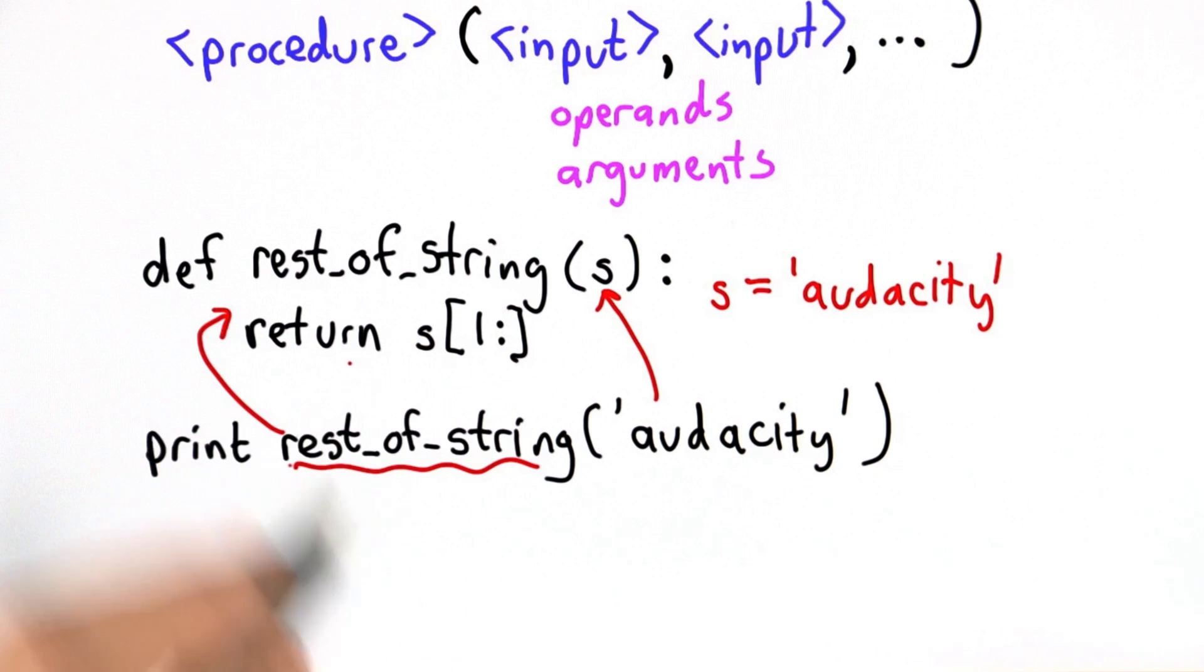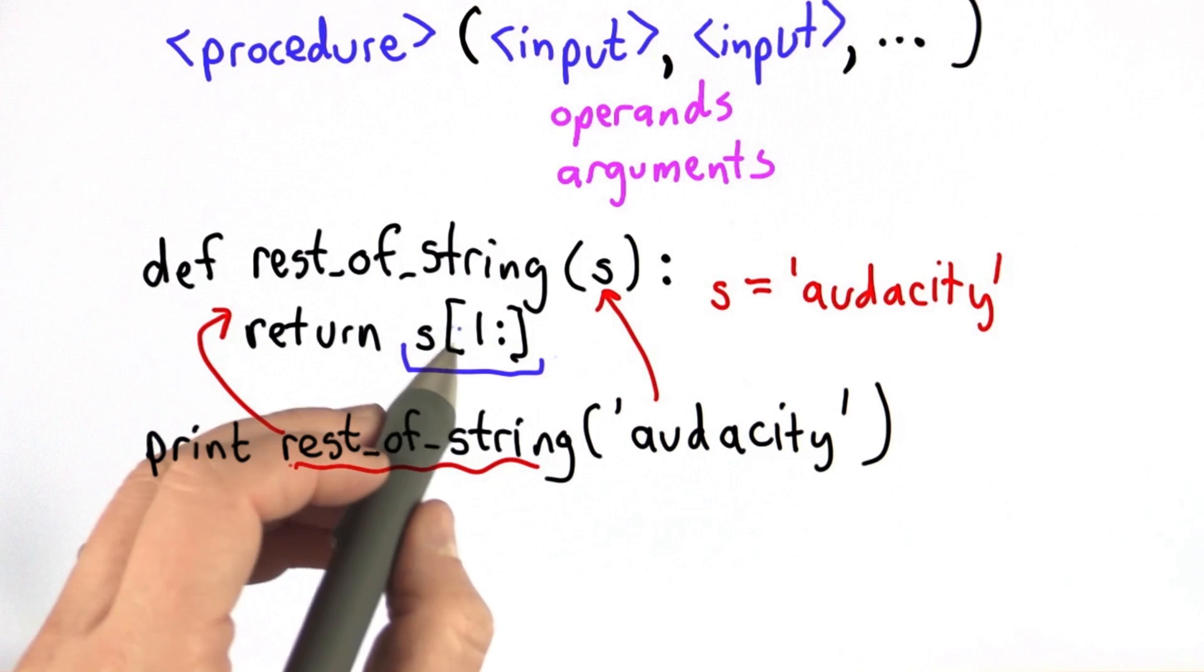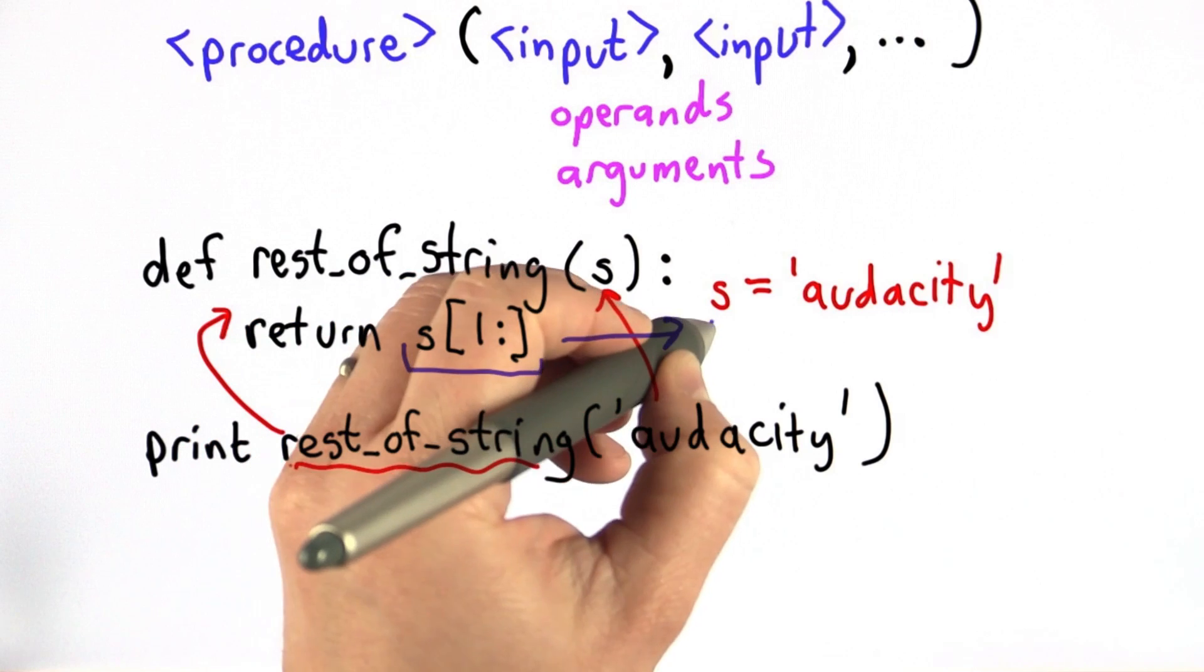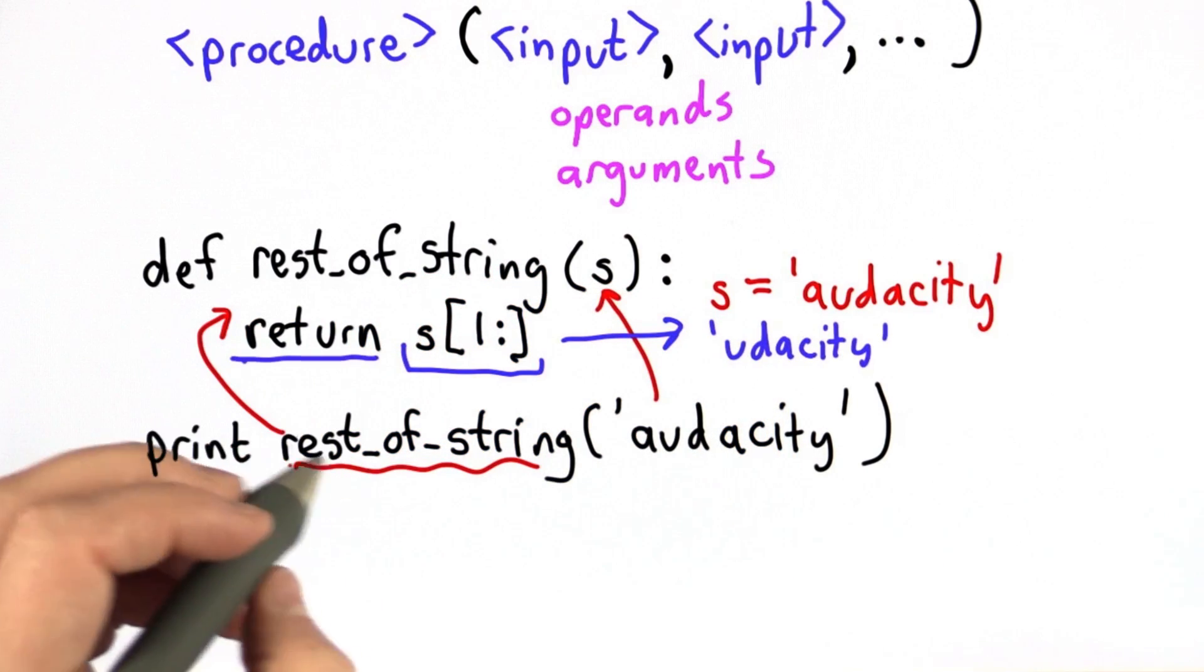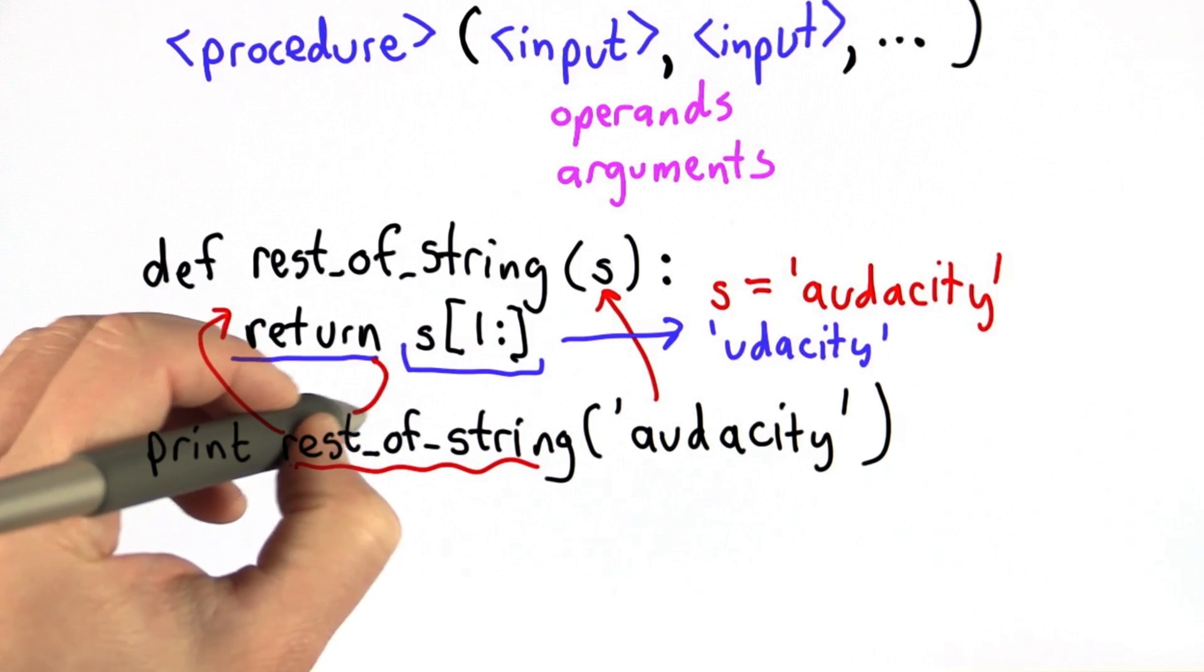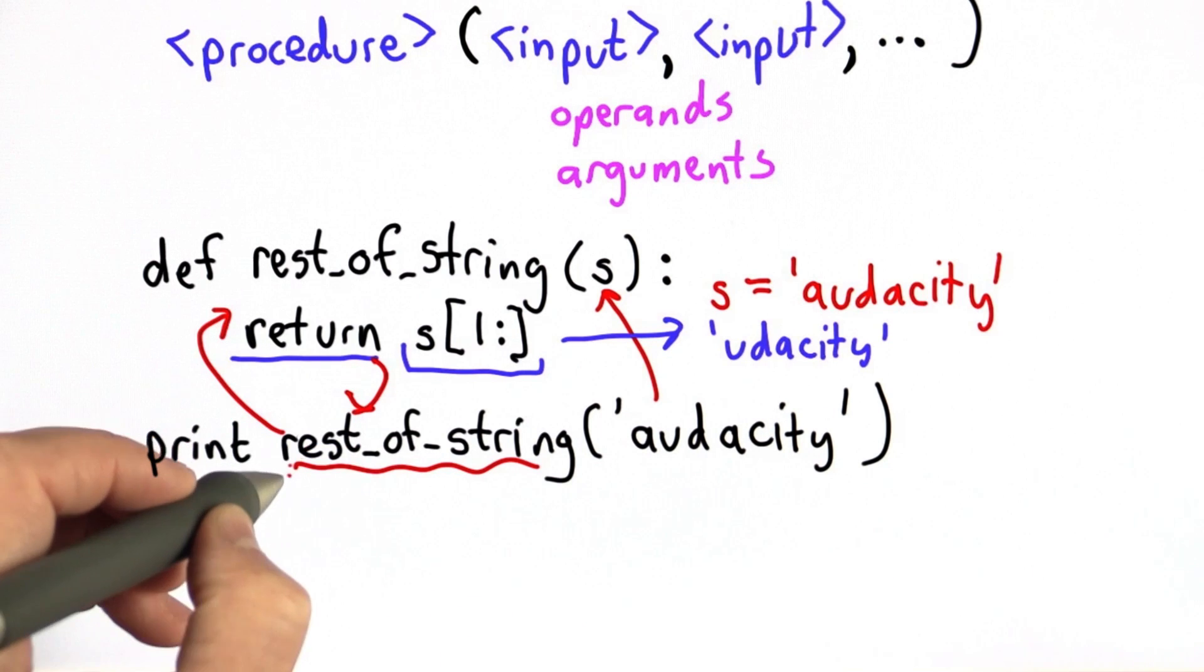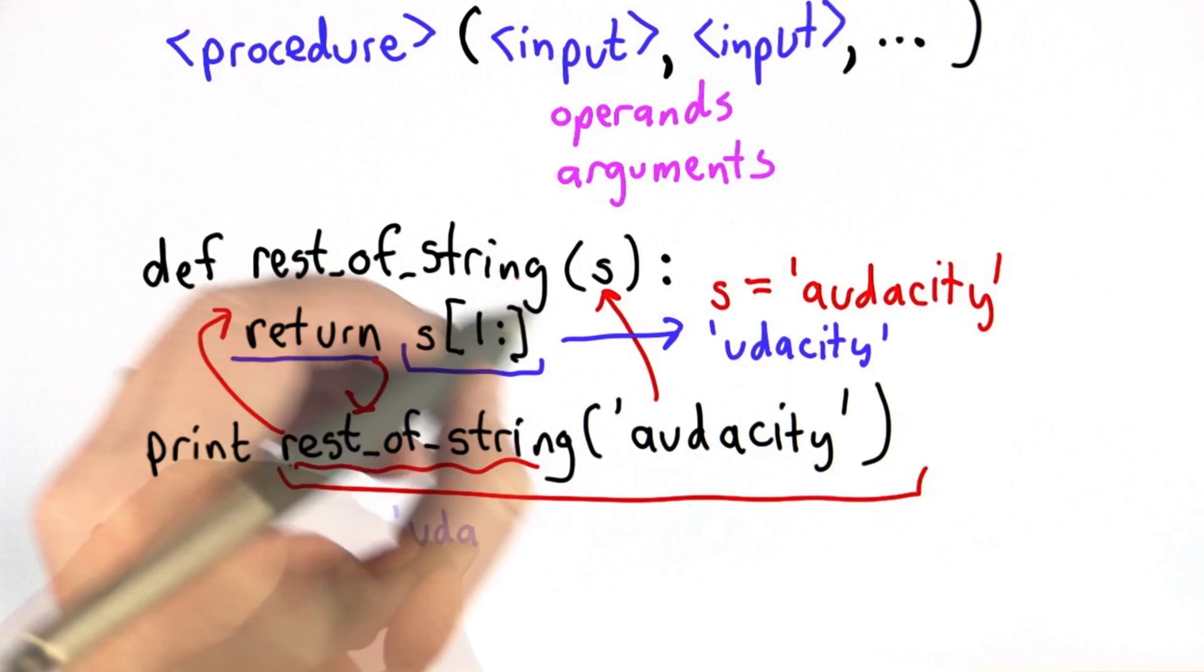In this case, there's only one statement. It's this return statement. We're going to find this value. So s[1:], the result of that is going to be the string Udacity. And then we got to the return. What return means is we're going to jump back. We're jumping back to where we called the procedure, but now we actually have a result. So when we jump back, the value that this evaluates to is whatever value we returned. In this case, it's the string Udacity.